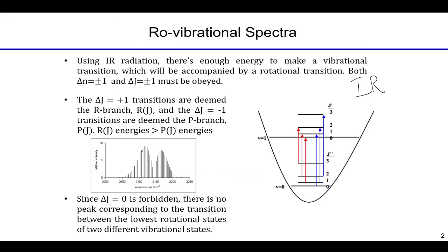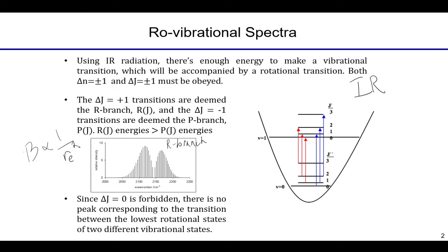The spacings between these peaks have something to do with the rotational constant B. As you go up in energy to larger states, the equilibrium bond length is actually increasing. So as you go to higher energies, the equilibrium bond length increases, which means B decreases. The R branch, the longer arrows, will have spacings that are closer together than the P branch because of this higher energy effect — longer equilibrium bond length leads to a lower rotational constant and smaller spacing between energy peaks.